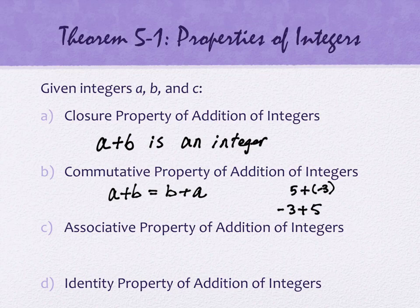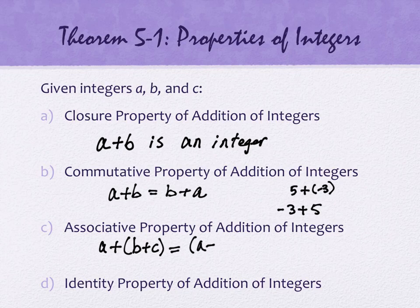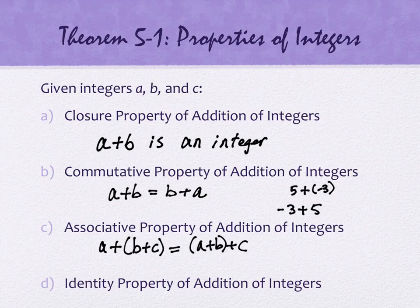The associative property looks like: A plus (B plus C) equals (A plus B) plus C. The order of grouping works out for us just like before. That's a nice feature because sometimes certain things are easier to add together — like adding all the positives first, then removing anything negative. It allows you to regroup, so that's helpful.